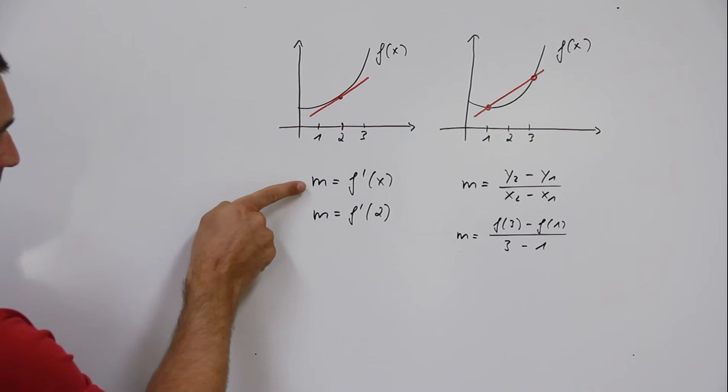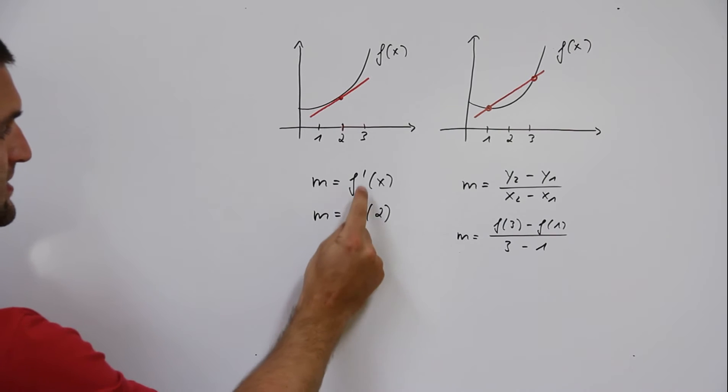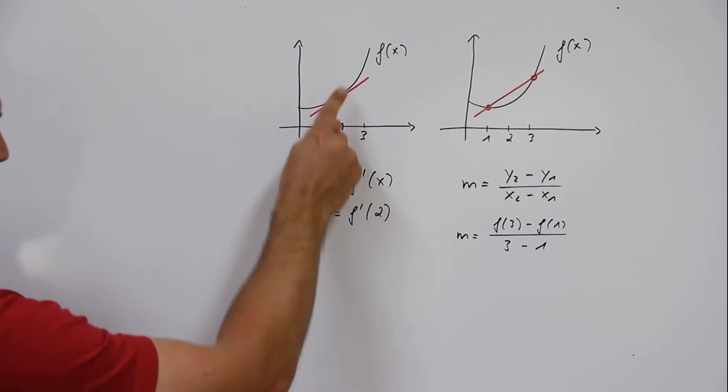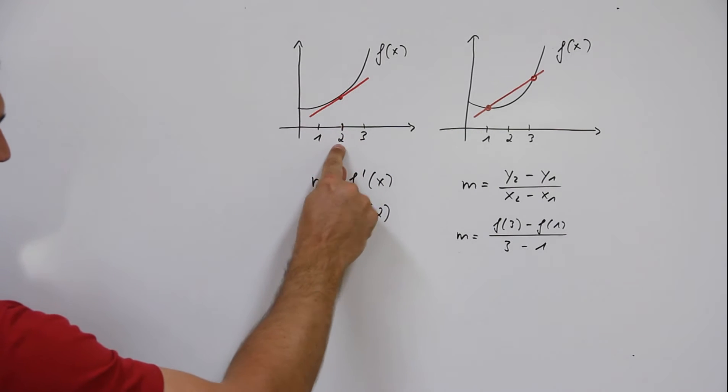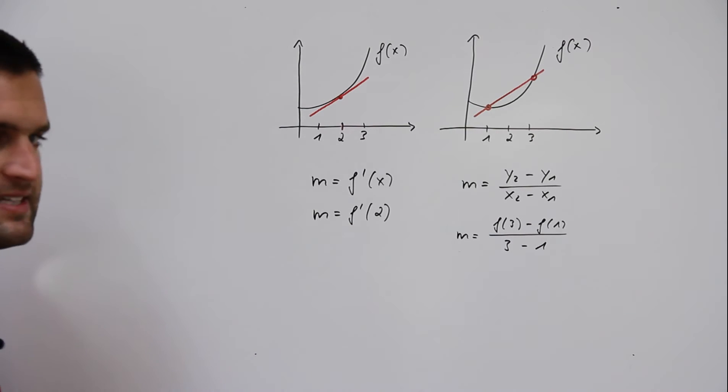The formula m equals f prime of x. So you need to build f prime of x and you need an x value. In this case it's two, plug in two in f prime of x and that's it.